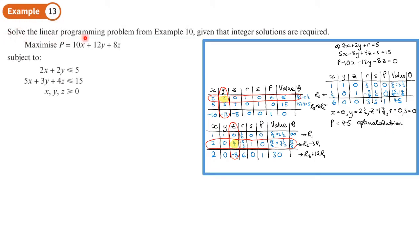Example 13: Solve the linear programming problem from Example 10, given that integer solutions are required. The working from Example 10 is here. The solutions we got from Example 10 were x equals 0, y equals 2 and a half or 5 over 2, and z equals 1 and 7 eighths or 15 over 8. The x value is already an integer, so the only ones we're going to change to integers are y and z. For y, the integer values are going to be 2 or 3, between 2 and 3. For z, the integer values are going to be between 1 and 2.